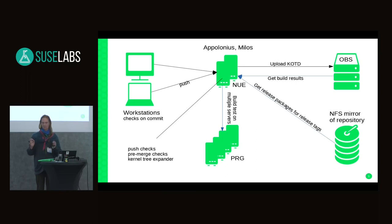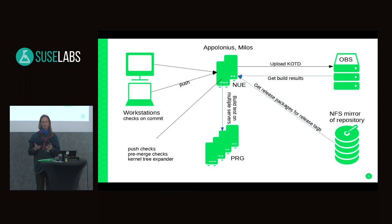We could spend time diagnosing this, but it makes more sense to change how we do things so the central servers don't do so much work. For example, the expansion isn't real-time anyway — it takes a few minutes. If we did it in the PROMO engineering cloud, it might even be faster because many machines are available there, and it would decrease load on the central server.